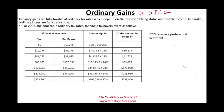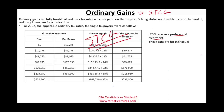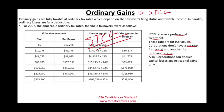Long-term capital gains receive preferential treatment — you don't use the ordinary tax table when computing long-term capital gains. You use that table for short-term capital gains, because those amounts get added to ordinary income. These rates are for individuals. For corporations, ordinary income and capital gains are taxed at the same rate, and corporations can only deduct capital losses against capital gains.